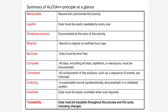Consistent: all components of the analysis, such as a sequence of events, are followed. Enduring: a sustainable record, systematically documented in a validated system. Available: data must be easily available whenever required. And the last one is Traceability: data must be traceable throughout the process and life cycle, including changes.